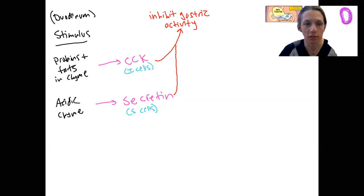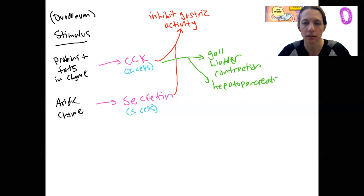One thing we have is going to be gallbladder contractions. Why? So we can release bile into the small intestine. Along with that, same idea, hepatopancreatic sphincter. What do you think it's going to do?